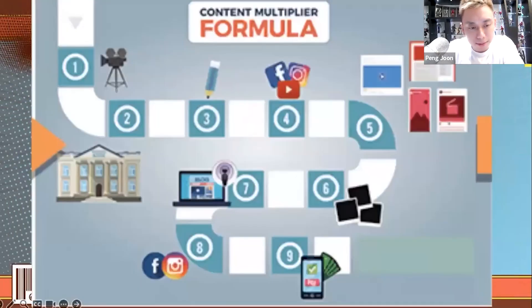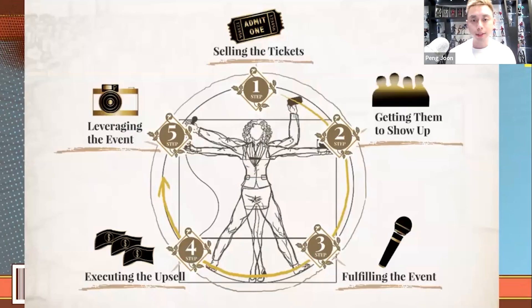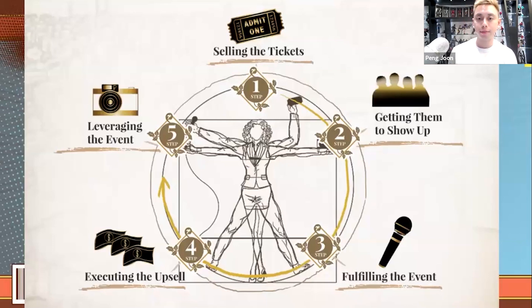As I give you these different examples — this was pulled from my sales letter, the Content Multiplier Formula, a free-plus-shipping offer I launched back in 2017 — to show marketers the process of multiplying content: shooting a video and having it multiplied across different platforms. This is another image I used to show people how to run successful events through the Event Codex — to run an event well and make sure it's profitable, you've got to understand how to sell tickets, get people to show up, fulfill the event, execute the upsell, and leverage the event. So what do you think today's session is about?